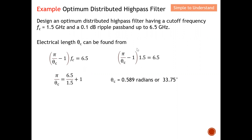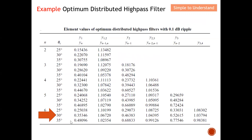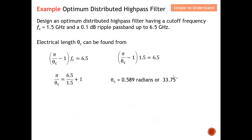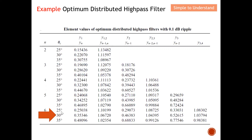After rearranging the formula, I can calculate the electrical length as 0.589 radians, which converts to 33.75 degrees using a calculator. Once I have this, I'm ready to use the table to calculate the impedance. My electrical length is 33.75 degrees. However, if I look at the table — for example using n = 6 — there is no entry for 33.75 degrees. The available entries are 30 and 35 degrees.